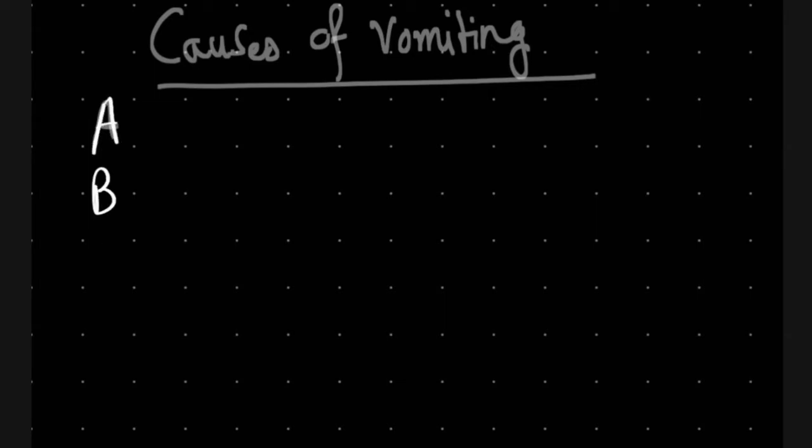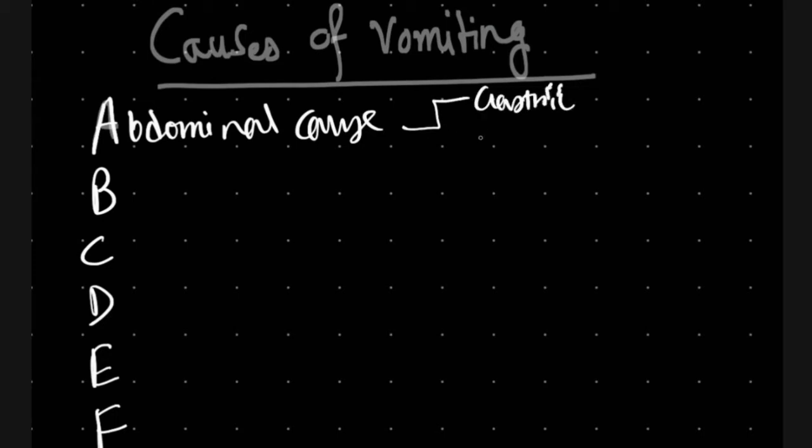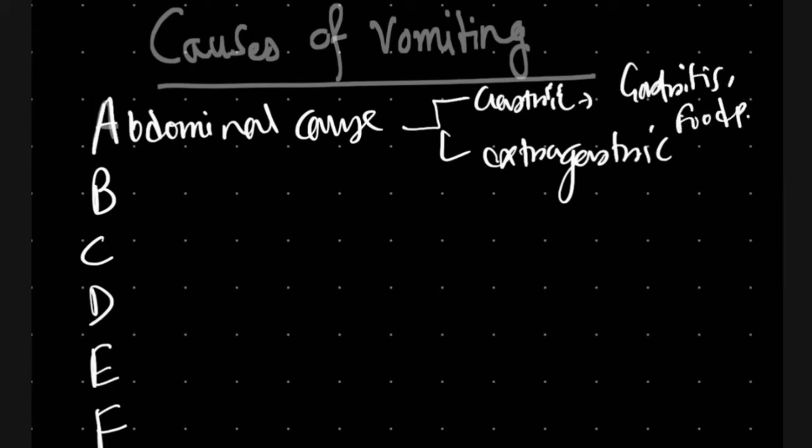The mnemonic is A, B, C, D, E, and F. A is for abdominal causes, which can be further divided into gastric and extra-gastric causes. Gastric causes include gastritis, food poisoning, and pyloric stenosis.